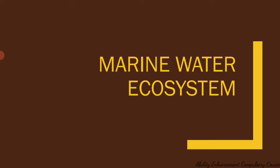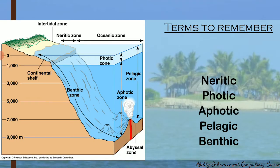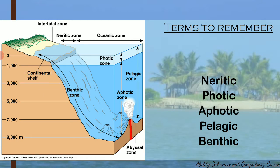Different types of organisms are found in a marine water ecosystem. The key terminologies for marine water ecosystems include: the neritic zone, which is the shallow marine water zone corresponding to the continental shelf; the photic zone, which receives ample light; and the aphotic zone, which receives minimal or negligible light.